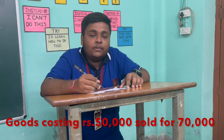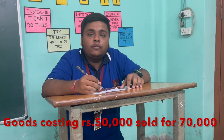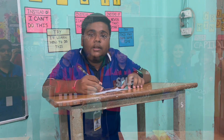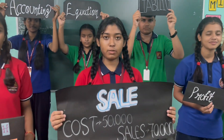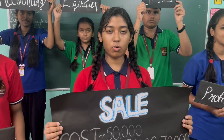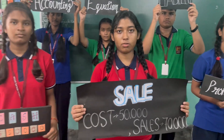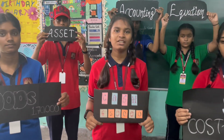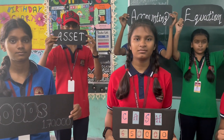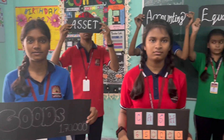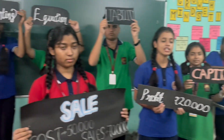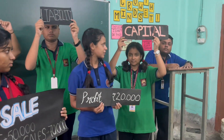Goods purchased for Rs. 50,000 and sold for Rs. 70,000. Cash will increase. Goods will decrease the assets. And profit will increase the capital.